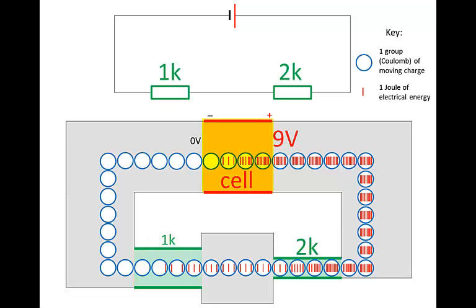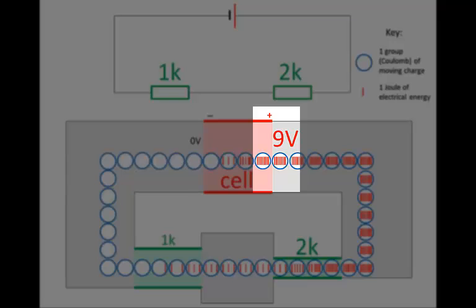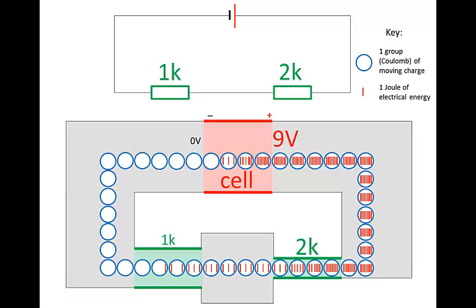This is a 9 volt cell. That means that each group — each coulomb of charge — receives 9 joules of energy from the cell as they move through it. So the voltage at the positive terminal of the cell is 9 volts. Notice that as these charges move along the good conductor, they don't lose any of their energy — the voltage stays 9 volts the whole time.